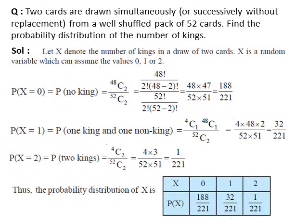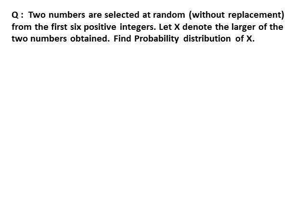In the next step, write the probability distribution of x in tabular form as shown. Next question: two numbers are selected at random without replacement from the first 6 positive integers. Let x denote the larger of the two numbers obtained. Find the probability distribution of x.